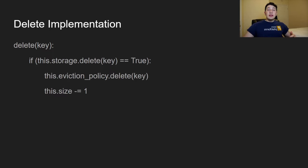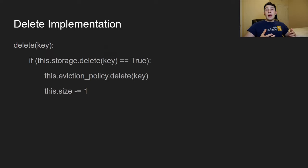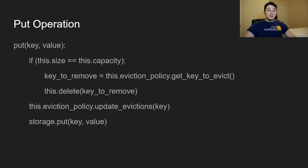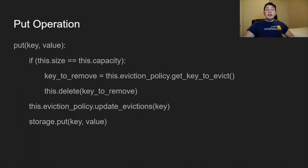For the delete method: if we're able to successfully delete the key from storage, we also tell our eviction policy we no longer need to track this key. We don't want the eviction policy to consider this key as a candidate for deletion anymore. We also decrement the size.